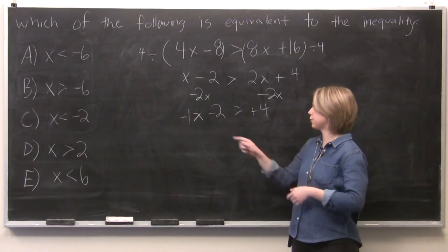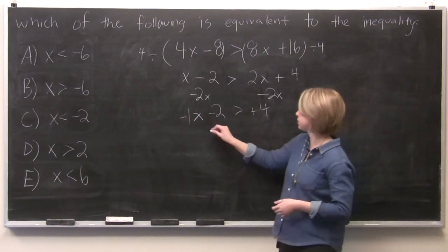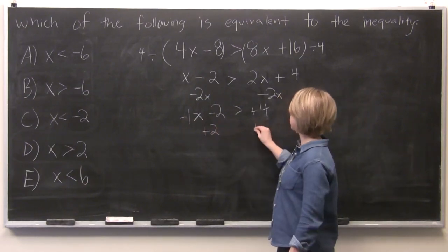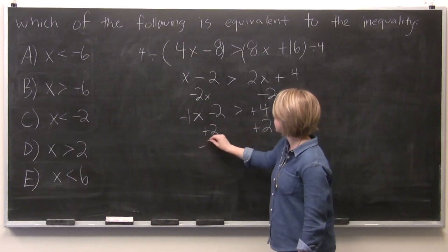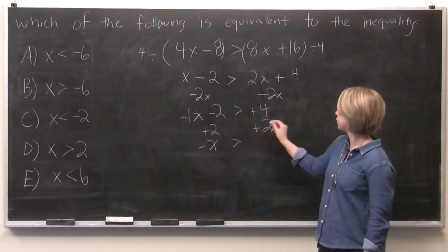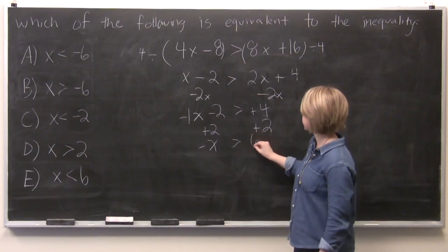And let's move our negative 2 over to the right. So we'll add 2 on either side. So our negative x is greater than 4 plus 2 is 6.